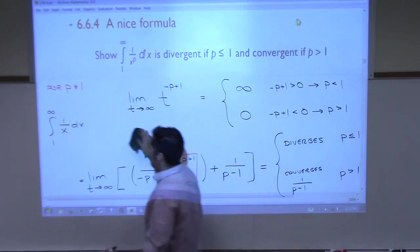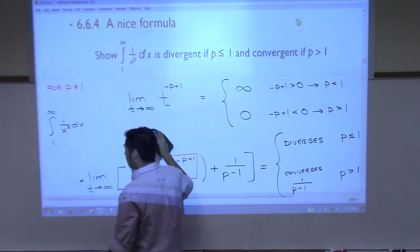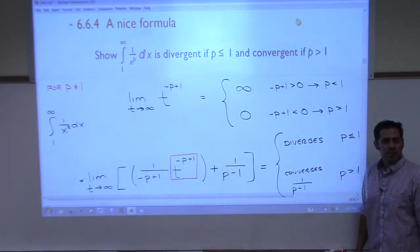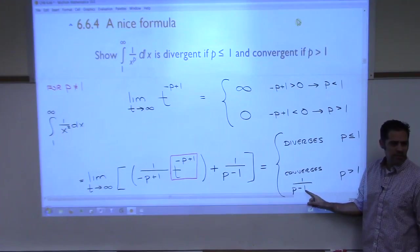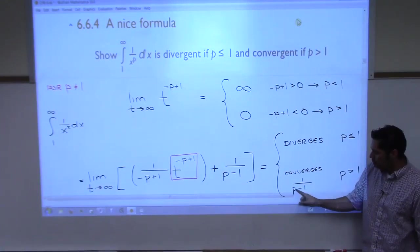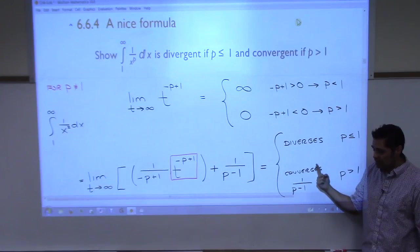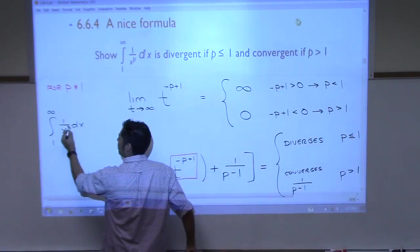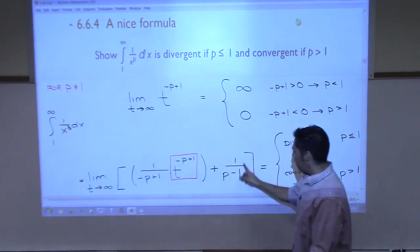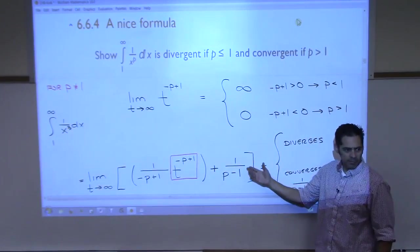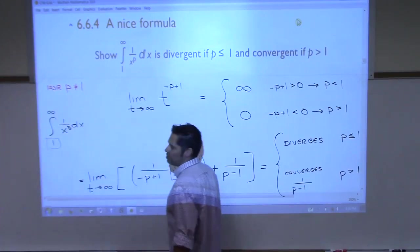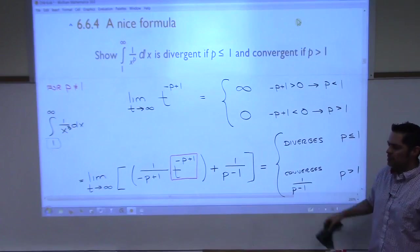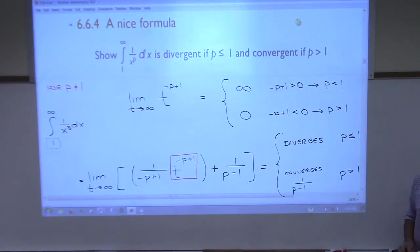So if you take the first example I gave you, it was 1 over x squared. What was p? 2, right? And according to this formula, we should get 1 over 2 minus 1. The answer should have been 1, was it? Yes. The answer was 1. If you plug in p is 2 here, 2 minus 1 is 1, 1 over 1 is 1. You get an answer of 1. That's what we got. So if this was 1 over x cubed, then what would we have? 1 half. Make sense? Now, also, it has to start at 1. If it starts at 2 or something, then this formula wouldn't work. We could do it. We could tweak it. But that wouldn't necessarily work the same way.